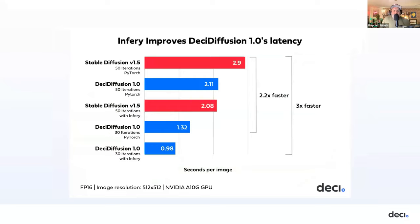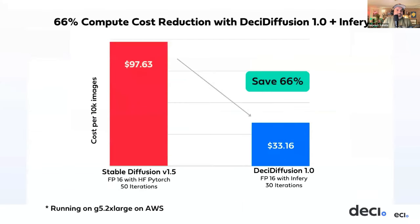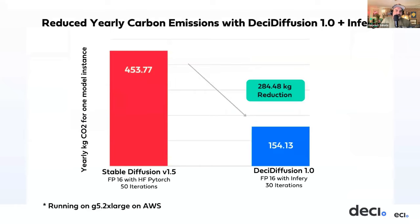Inferry is our inference server — an SDK tailored for generative AI models. It incorporates advanced techniques like selective quantization, hybrid compilation, and specialized CUDA kernels to speed up inference for both diffusion models and language models. When Inferry is coupled with Desi Diffusion, we're able to generate high-quality images in under a second, leaving other methods in the dust. It also reduces costs and carbon emissions.